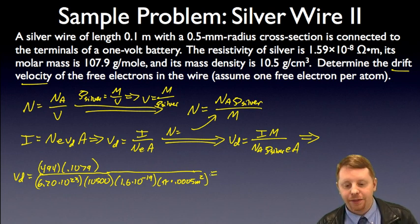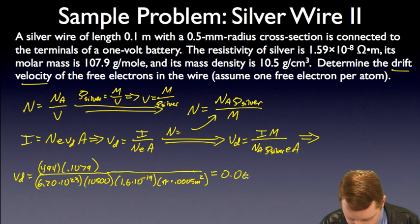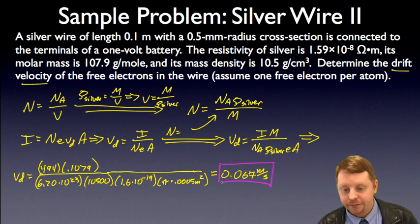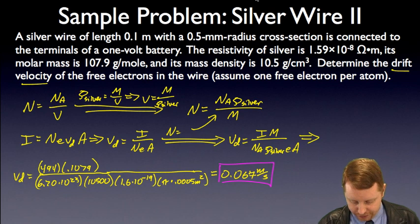Run all that through my calculator, and I come up with the drift velocity of right around 0.067 meters per second. Pretty small drift velocity compared to that thermal motion that we're used to.